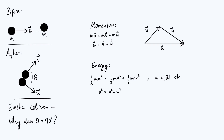We already know that u, v, and w form a closed triangle shape, and now we have another relationship between the side lengths: u² = v² + w². You'll recognise this as Pythagoras's theorem, and so the angle alpha at the vertex of the vector diagram where v and w meet must be equal to 90 degrees — it is a right-angle triangle.